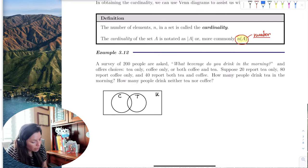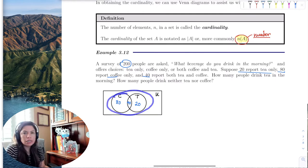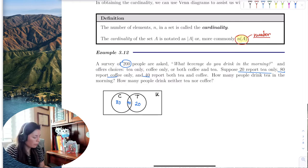If we know that 20 report tea only, 80 report coffee only, and 40 report both coffee and tea, we do know that 200 people were surveyed. So there are people here in this, outside of these two sets of coffee and tea, that they drink orange juice or a protein shake, whatever.